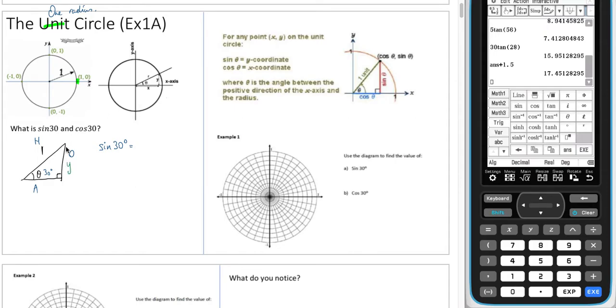So sine 30 is equal to y, which is opposite over hypotenuse, which is 1. So therefore we can say that y is equal to sine 30 degrees.